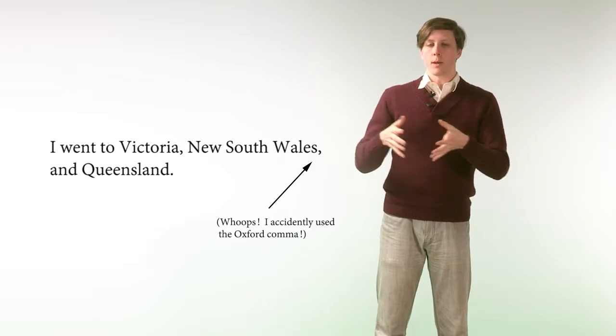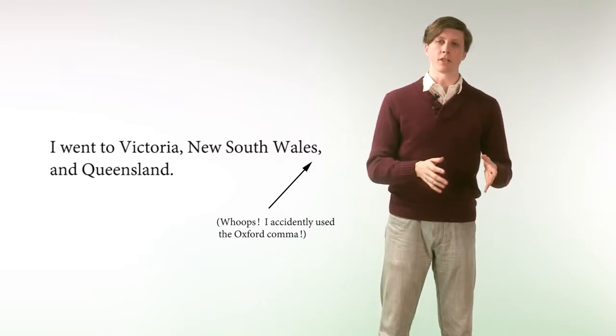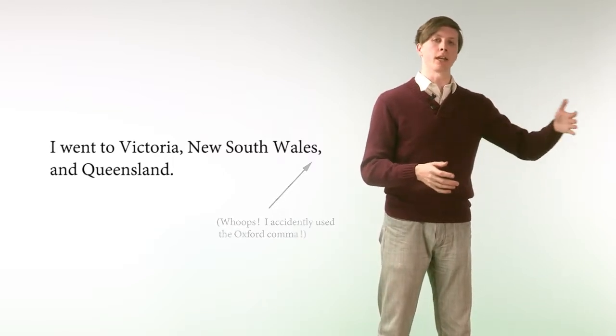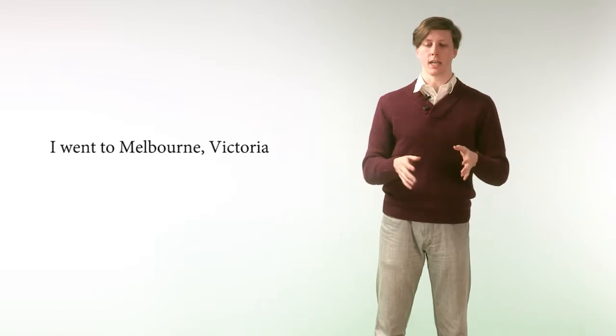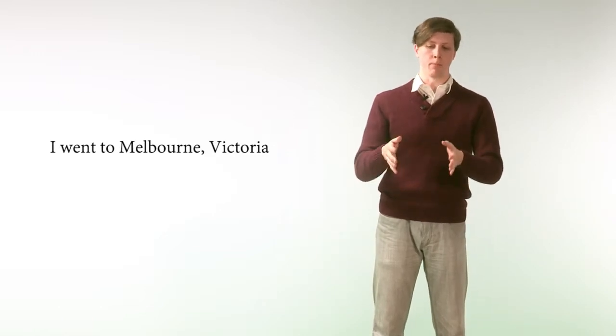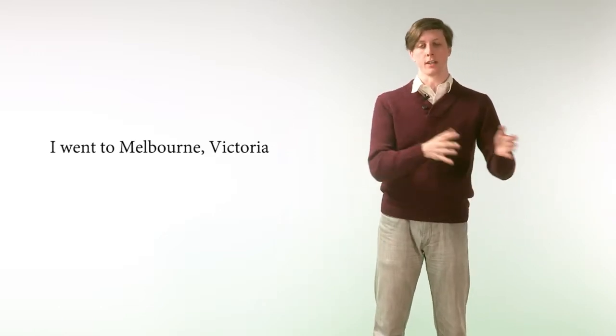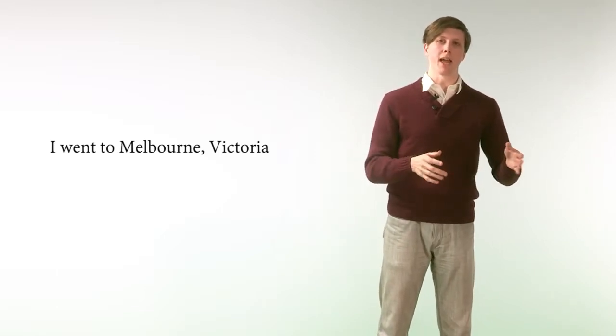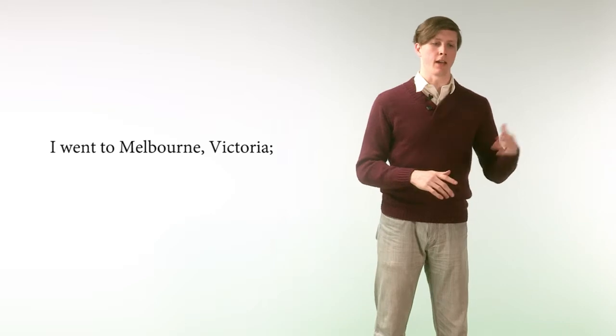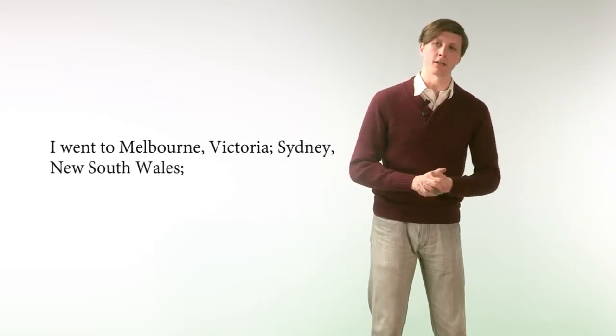But when you separate it up so that commas are part of your list, you need a semicolon to clearly separate the items. So you might say, I went to Melbourne, Victoria. And as you can see, we need the comma to mark Melbourne and Victoria because we have city, state. So we'll say Melbourne, Victoria, and then semicolon Sydney, New South Wales, and so on.